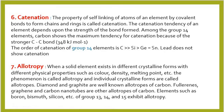Now, catenation. Catenation is the property of self-linking of atoms of an element by covalent bonds to form long chains and rings, forming bulky compounds. The catenation tendency depends upon the strength of the bond. In group 14, carbon shows the maximum tendency for catenation because of the strong carbon-to-carbon bond, requiring 348 kJ per mole to break. The order of catenation in group 14 is: carbon has the maximum tendency, followed by silicon, then germanium and tin which have equal tendency, and lead does not show any catenation.